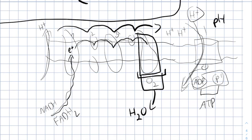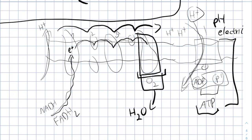The protons create an electrochemical gradient, which is also a change in pH because protons create a change in pH, as well as an electrical gradient. The electrochemical gradient is used in order to provide energy and to spin ATP synthase. When ATP synthase spins it can create enough energy in order to combine ADP and phosphate to create ATP again. ATP is the major energy supply of the cell.